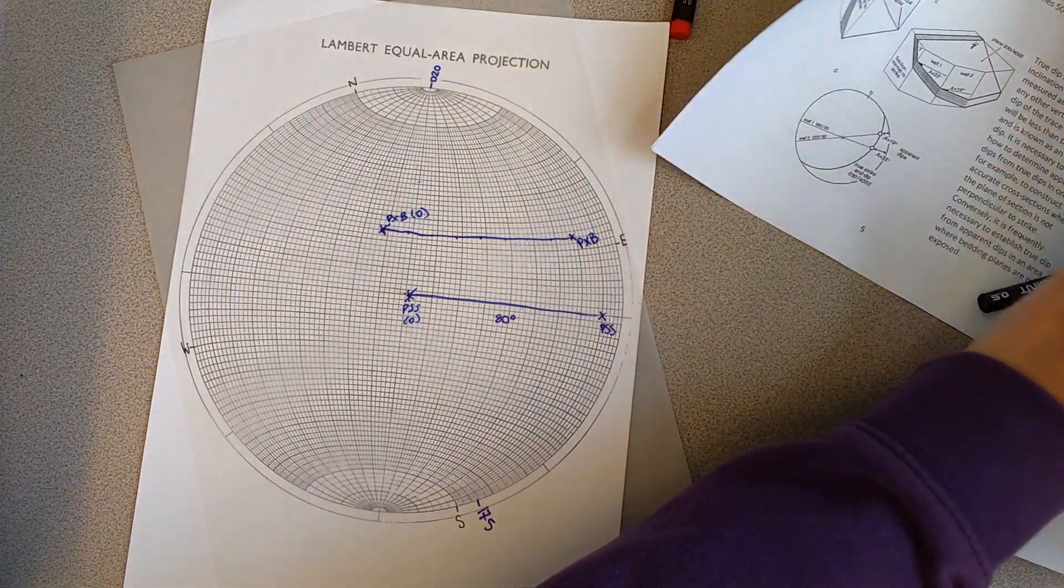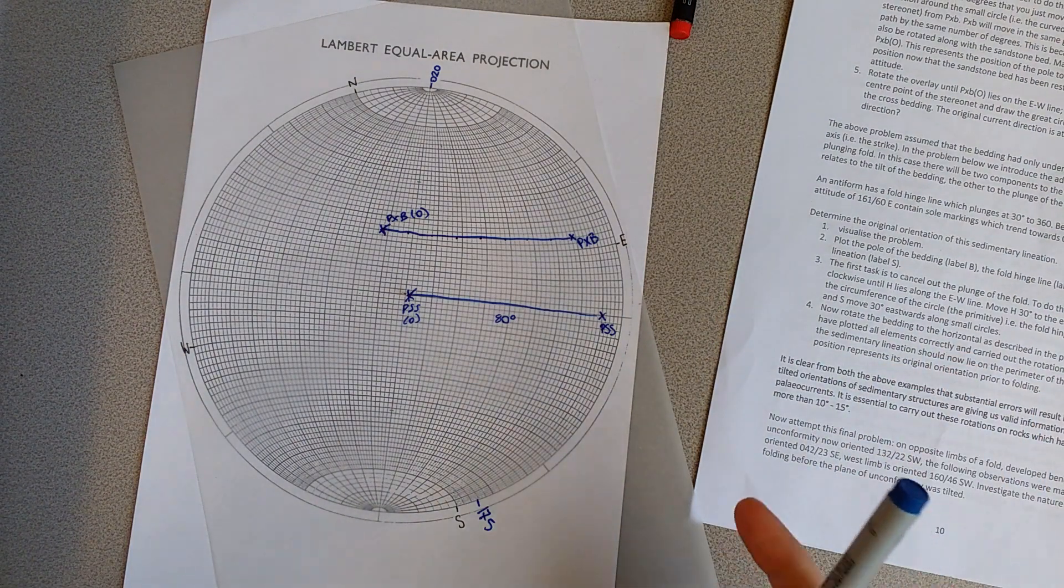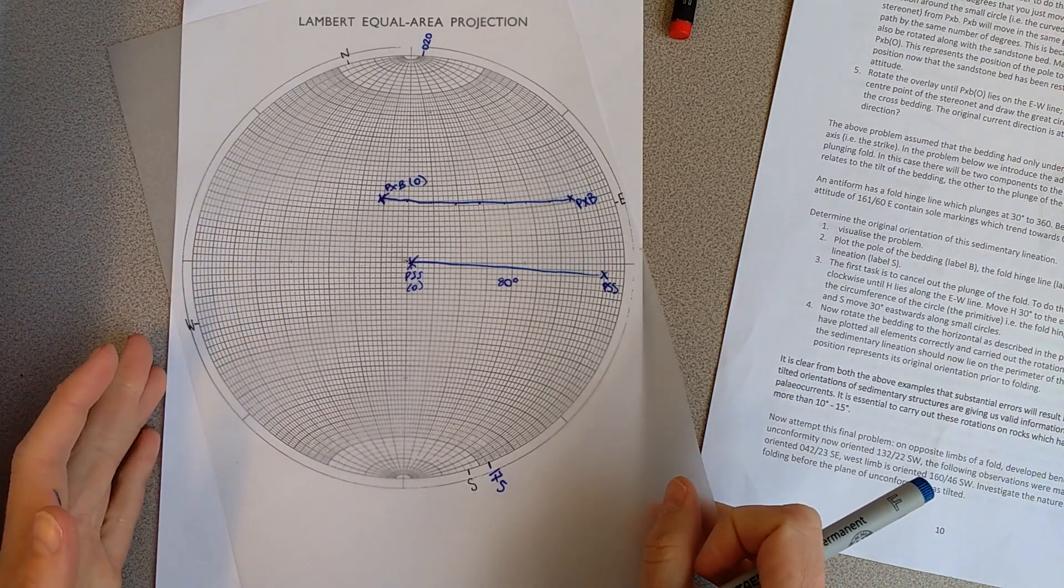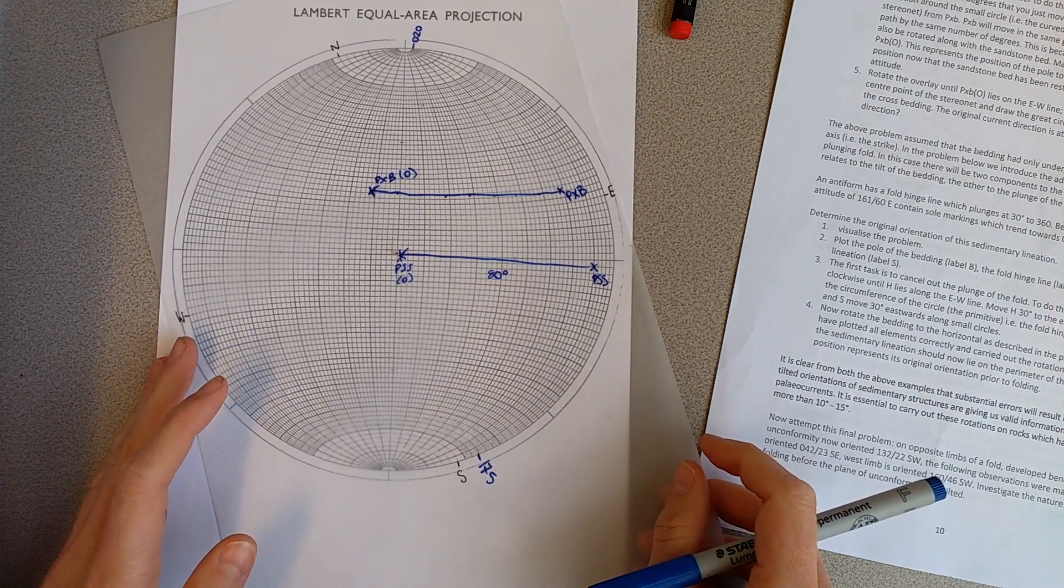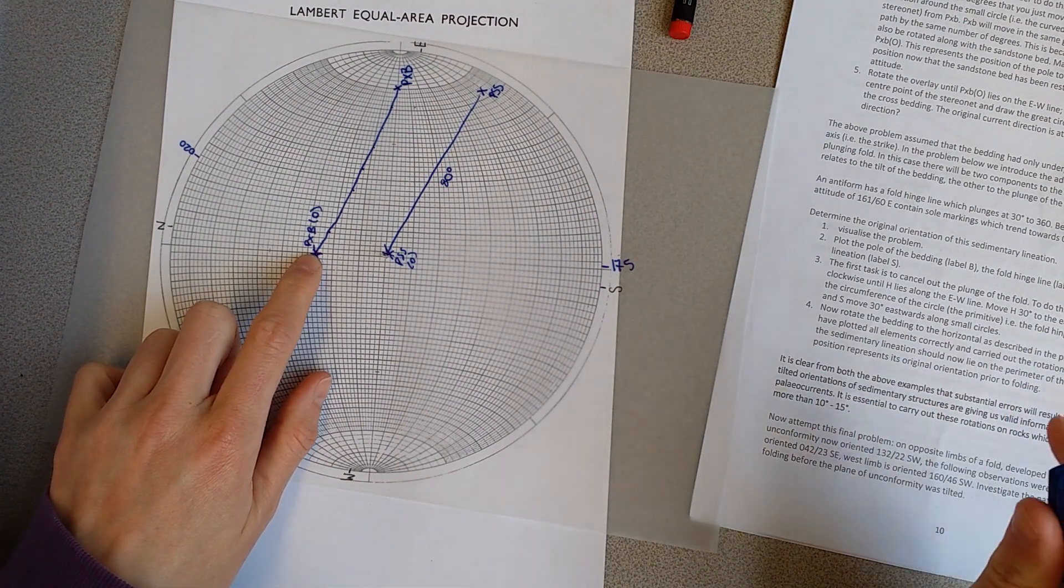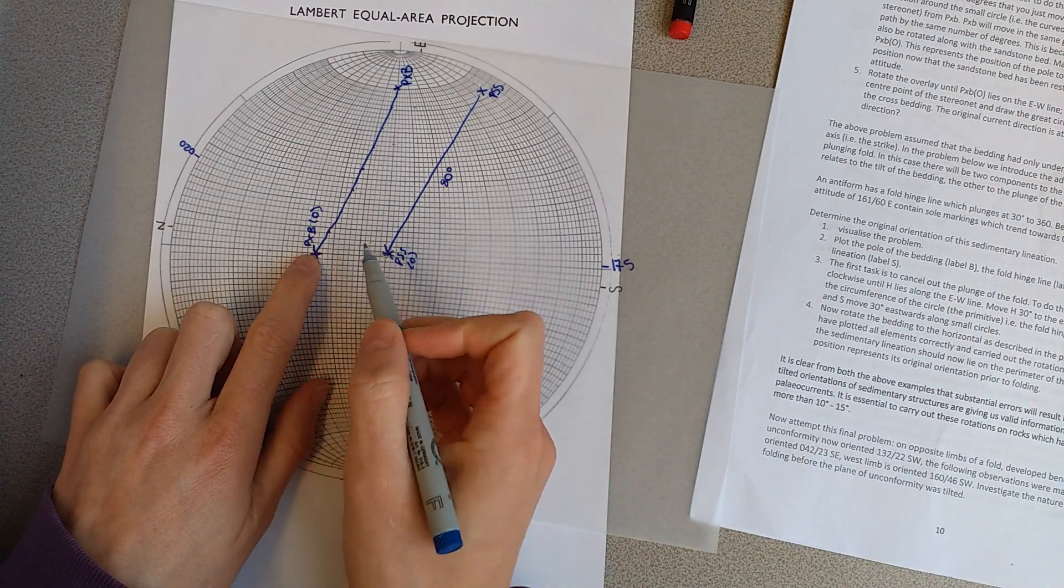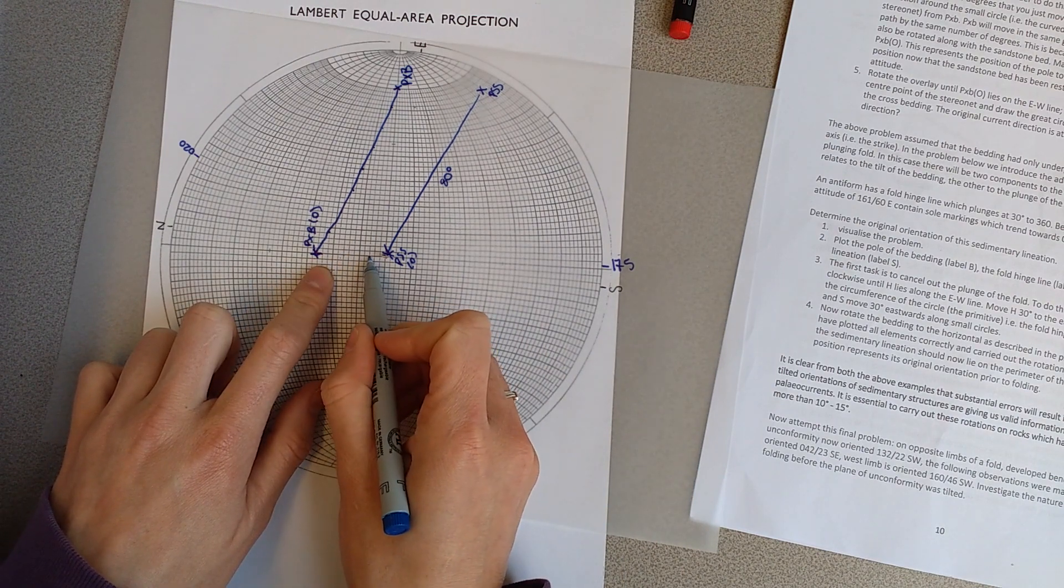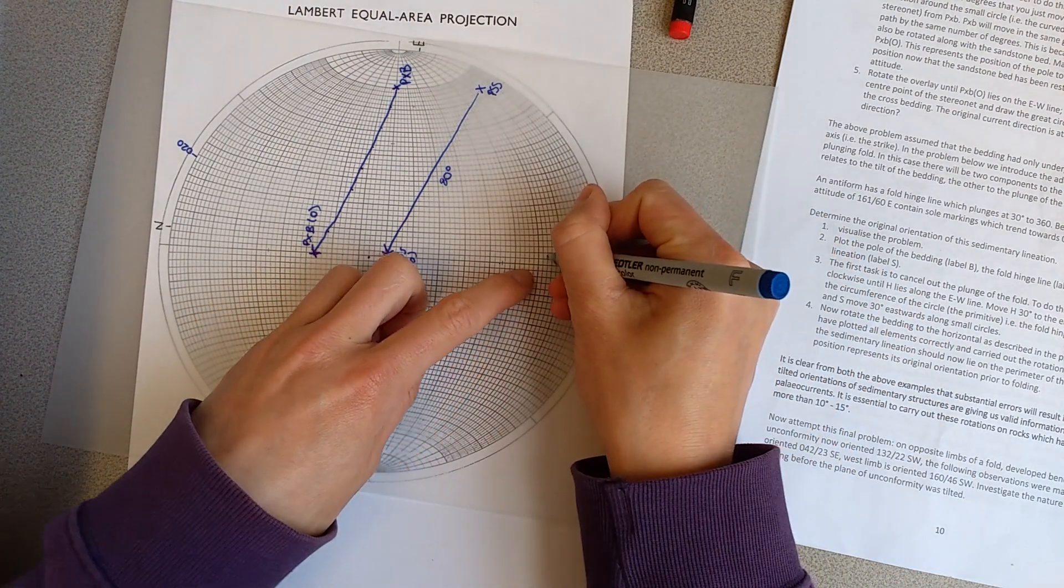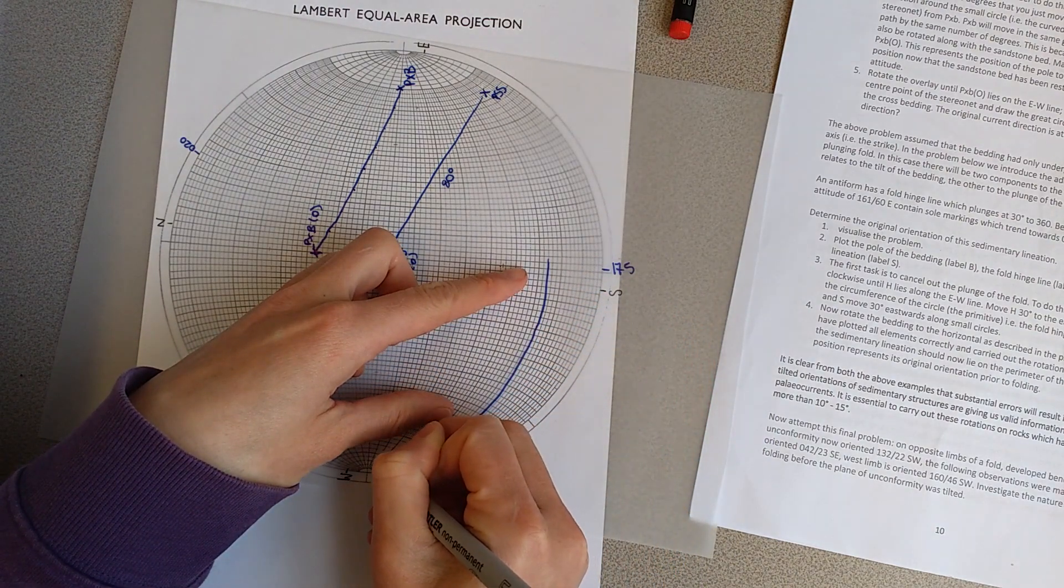The final thing you're asked to do is work out the paleo current of these cross beds. Now they're horizontal we can work out the paleo current accurately. We're going to rotate the cross beds so they're on the east west line. That is the pole to the cross beds, so we're now going to draw the plane which represents this cross bedding at its horizontal state. To do that we're going to go 90 degrees back, so that's 10, 20, 30, 40, 50, 60, 70, 80, 90 to here. Then I'm going to draw the great circle here that represents the restored cross bedding.